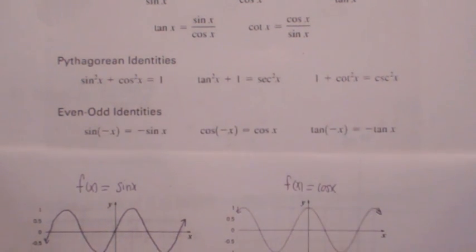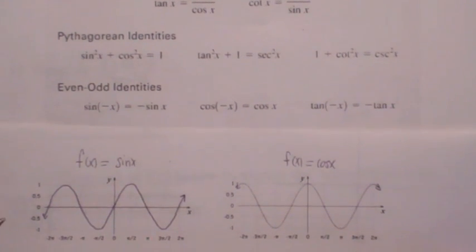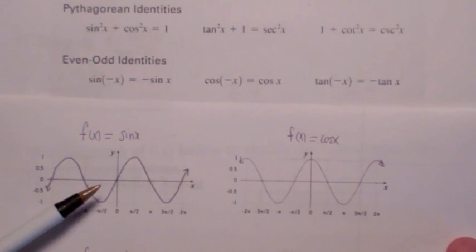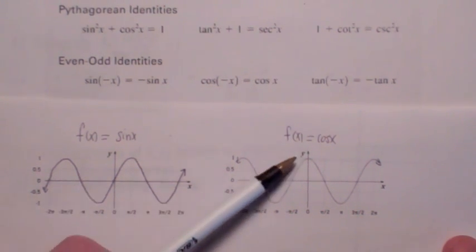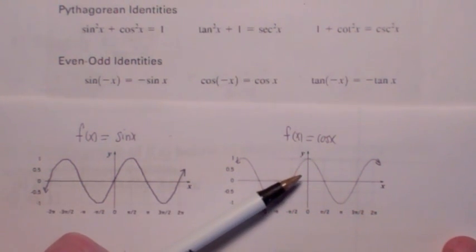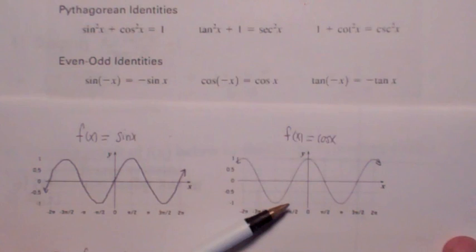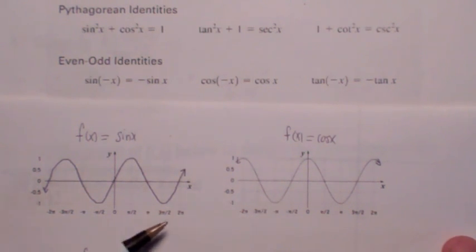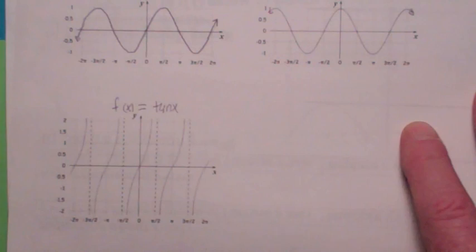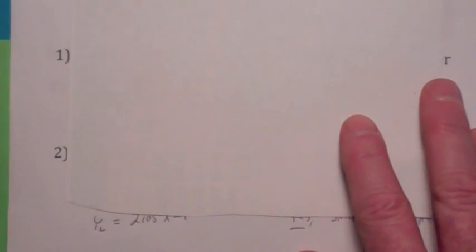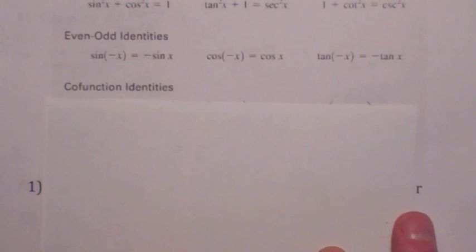For the even and odd identities, I'd suggest keeping those straight by looking at the graphs of the sine and cosine functions. Sine is an odd function, so sine of negative x equals negative sine of x. Cosine is an even function, so cosine of negative x equals cosine of x, because the graph is symmetric with respect to the y-axis. Tangent is also an odd function, so tangent of negative x equals negative tangent of x.